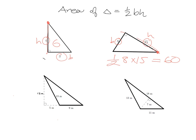In this next case we'd again be tempted to use the bottom as the base, but we don't have the height from the opposite corner straight down to it. Turning the page, we can choose 18 as the base; the corner opposite comes directly down at 90 degrees and the height is 7. So the area is half times 18 times 7 — half of 18 is 9, and 9 times 7 is 63.